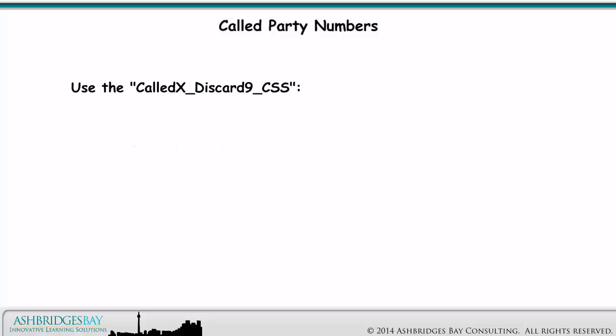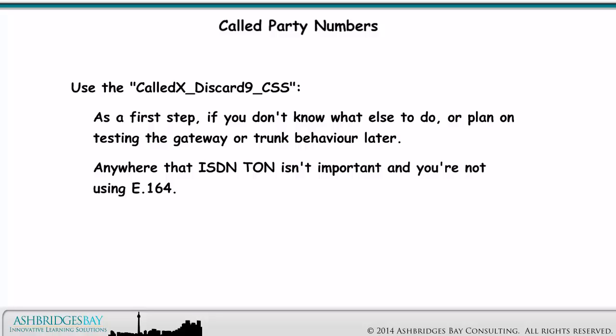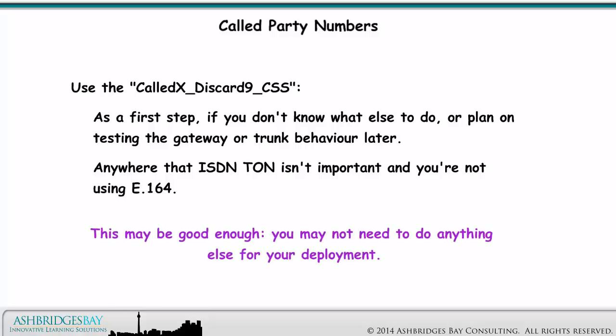Use the called X discard 9 calling search space as a first step if you don't know what else to do, or plan on testing the gateway or trunk behavior later. Anywhere that ISDN type of number isn't important and you're not using E.164, this may be good enough. You may not need to do anything else for your deployment.